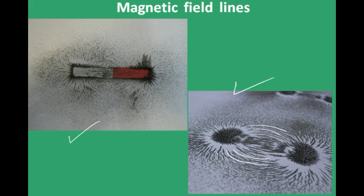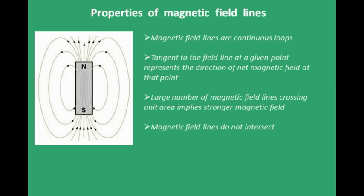These lines formed by the iron filings are nothing but magnetic field lines. Just as we had electric field and electric field lines in electrostatics, we have magnetic field and magnetic field lines here. These field lines are continuous loops — there are field lines even inside the magnet. The tangent to a field line at any given point represents the direction of the net magnetic field at that point.